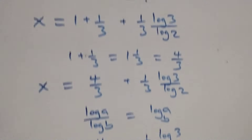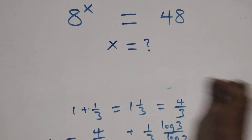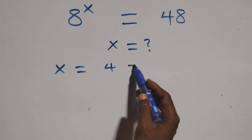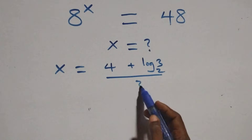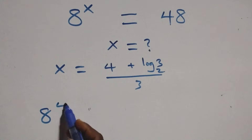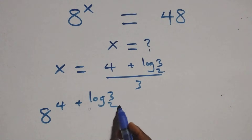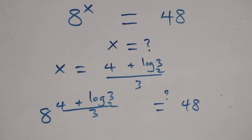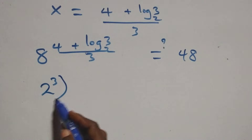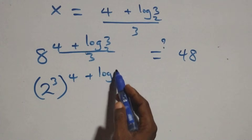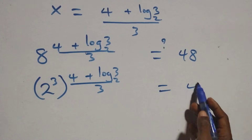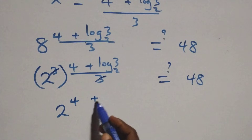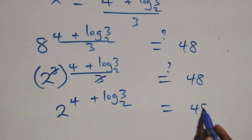Now let's check that this satisfies the given problem. We substitute the value of x, which is x equals to 4 plus log 3 base 2, all over 3. So we have 8 raised to the power of 4 plus log 3 base 2, all over 3. We can write 8 as 2 raised to the power 3, giving us 2 raised to the power 3 times x, which equals 48. The powers multiply, the 3 cancels, and we have 2 raised to the power 4 plus log 3 base 2 equals 48.